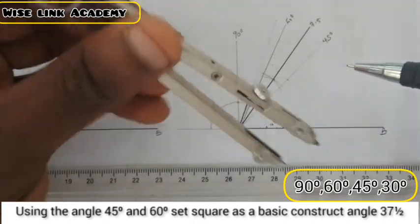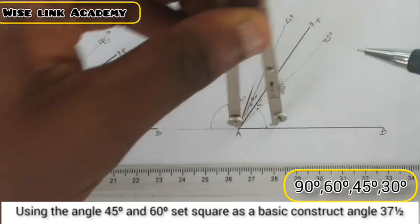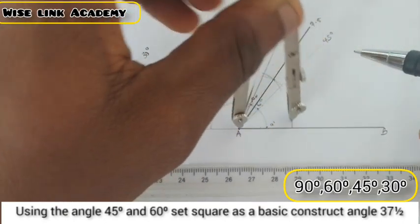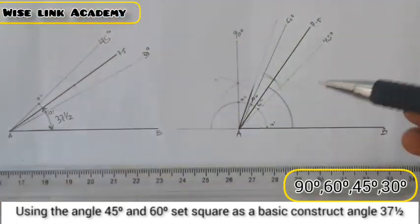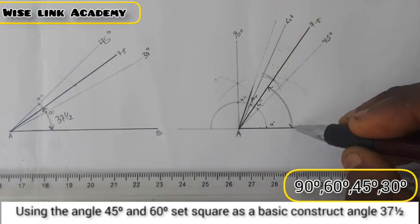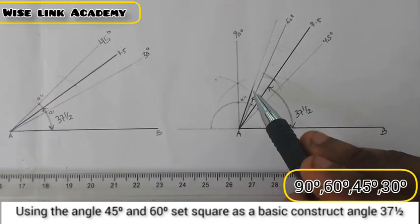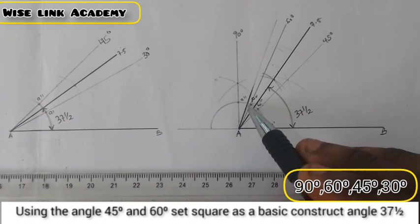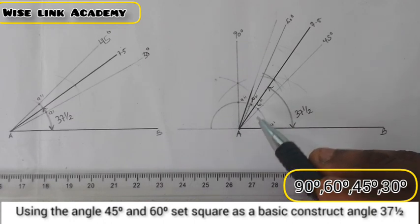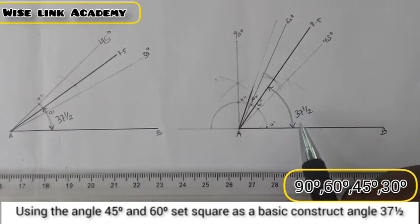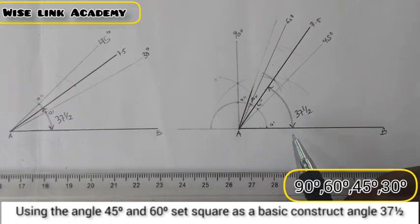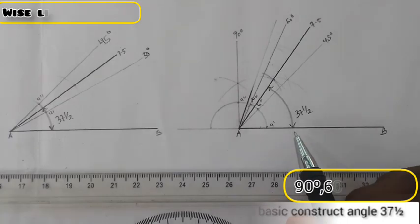The angle from this point here to this point is going to be 37 and half. Please take note, I do not need this line here, it's a mistake. What we need is 60 and 45. If you found this video helpful, kindly click on the description button and like. Thank you. Welcome to Wise Link Academy. Thanks for watching.